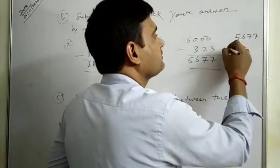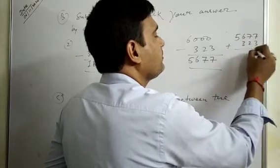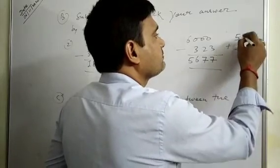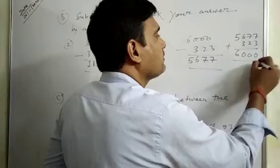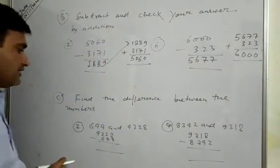Now we check it: 5677 plus 323. We get 6000. Wait, 6780. Here, find the difference between the numbers.